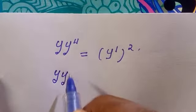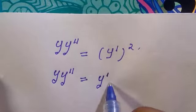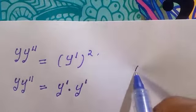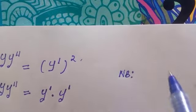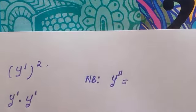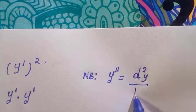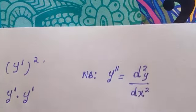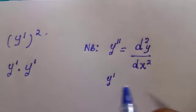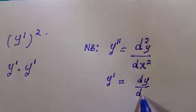This can be written as y·y'' equals y'·y'. Here y'' is the second derivative of y, which is d²y/dx², differentiating with respect to x. And y' is the first derivative, which is dy/dx.